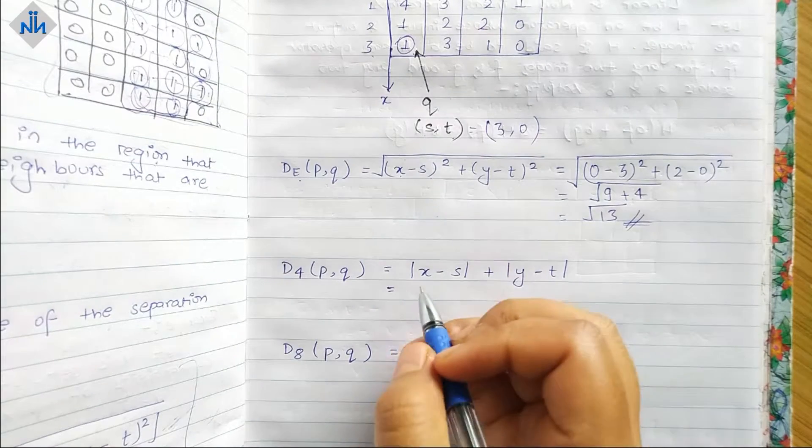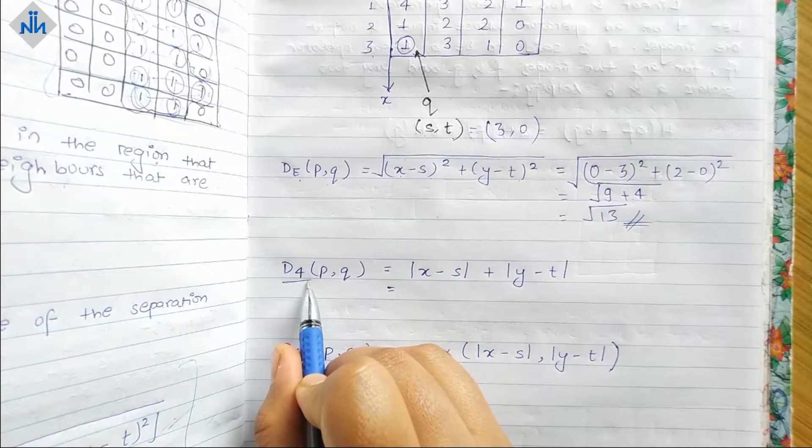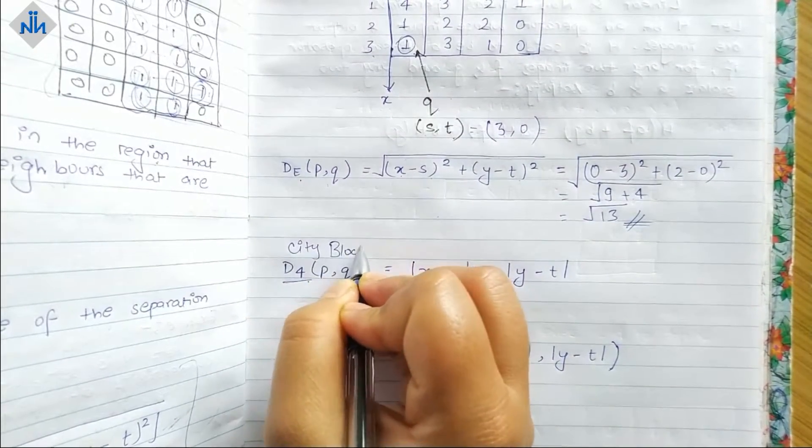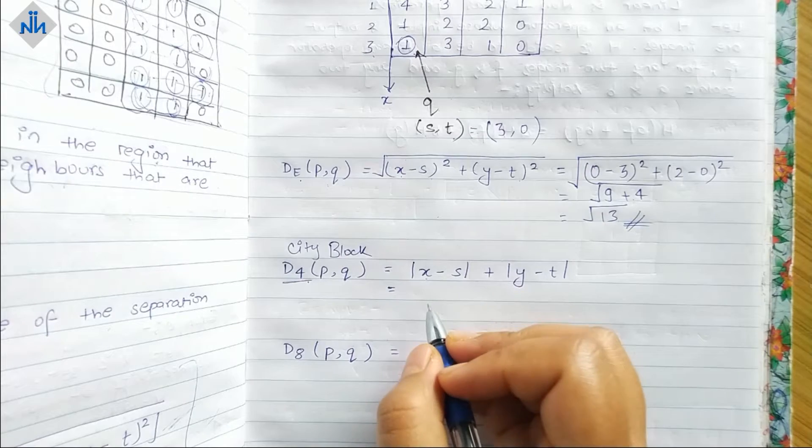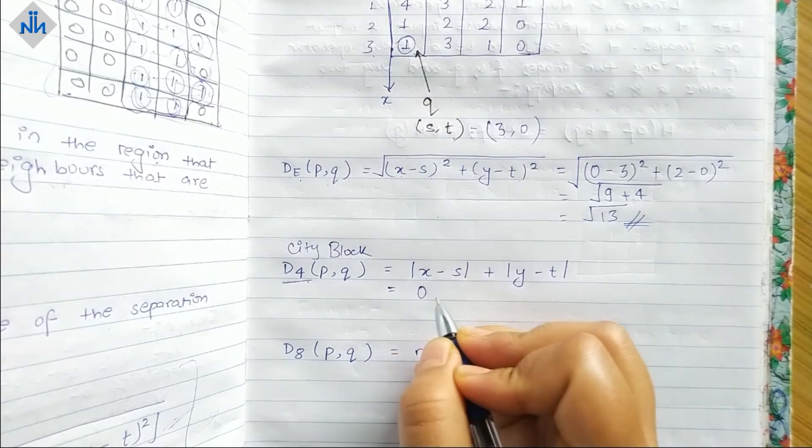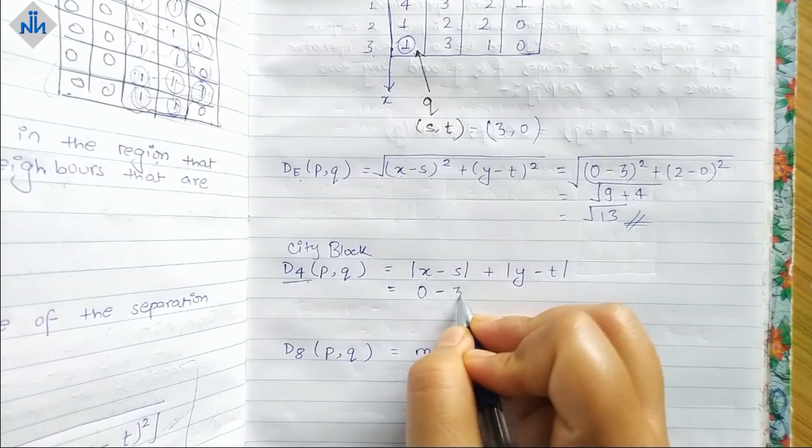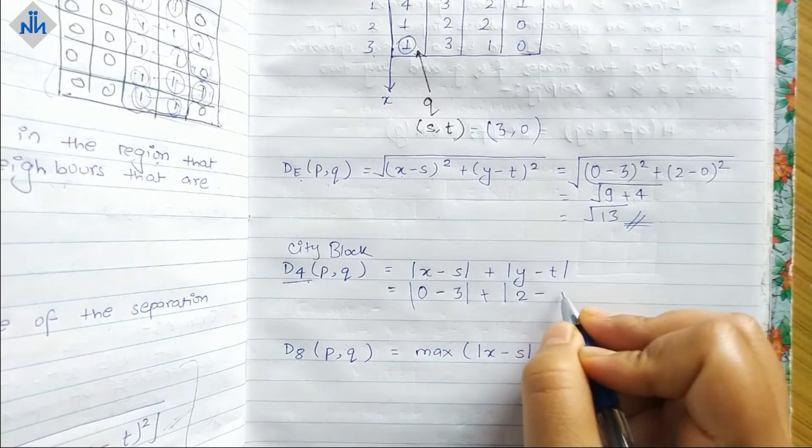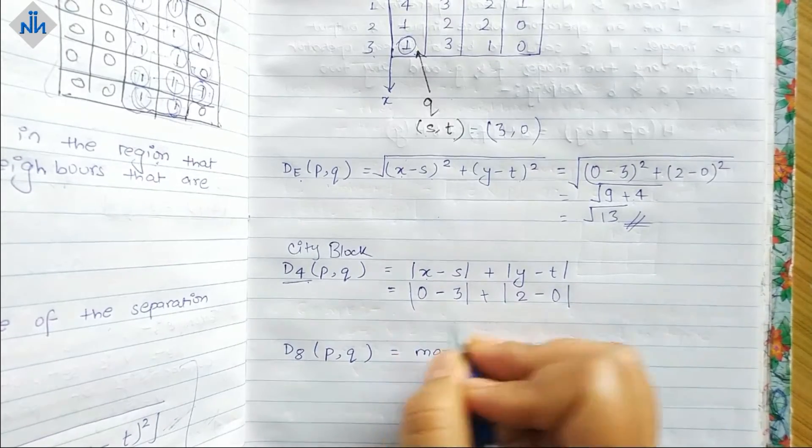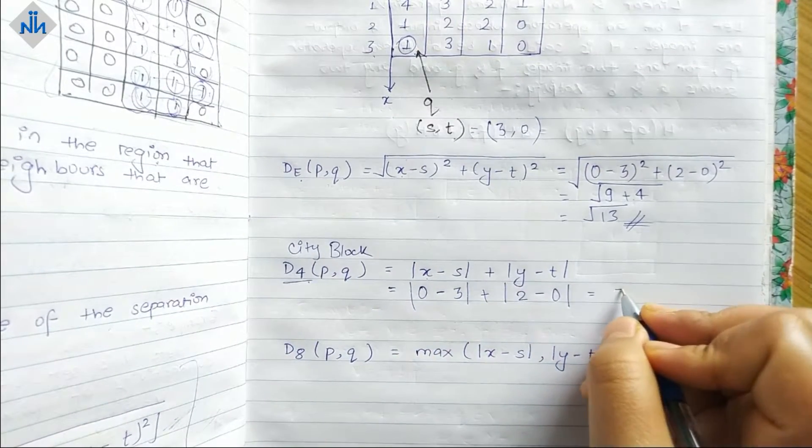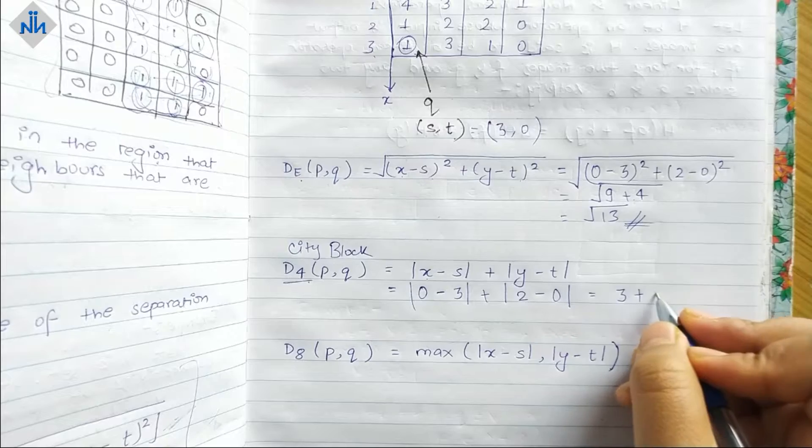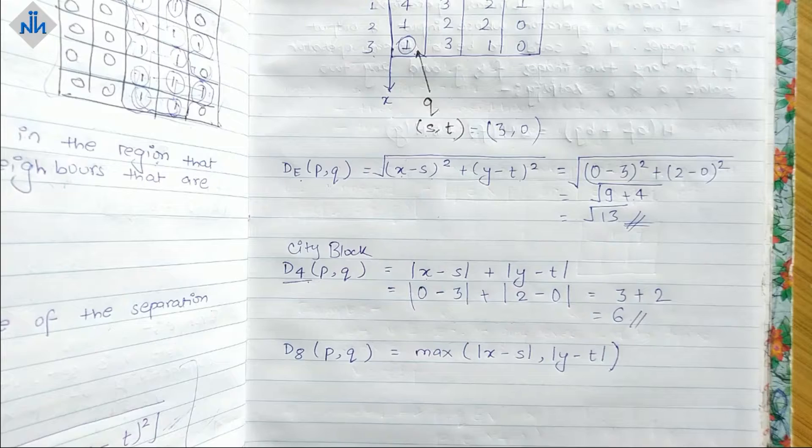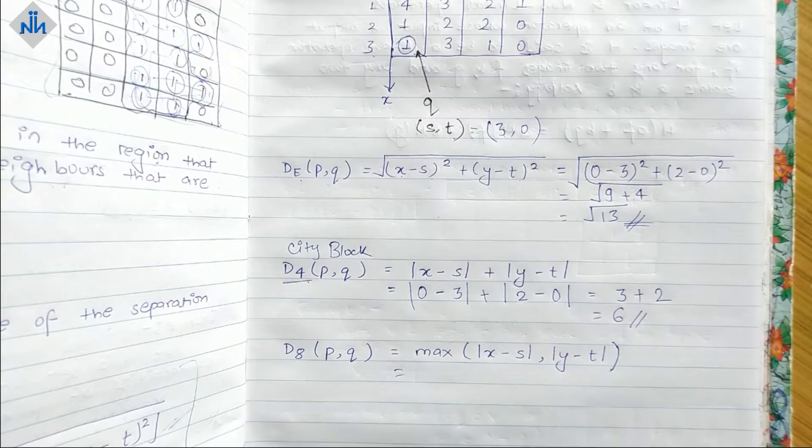After that we have D4, that is City block. The formula is |x minus s| plus |y minus t|. What is x? We have x as 0 and s as 3, plus y is 2 minus 0. This will give us |-3| plus |2|, and since we have mod it will become 3, and 3 plus 2 is 6. So our answer is 6.